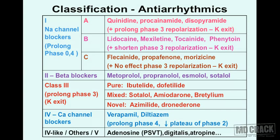Class 1 has three subclasses: 1A, 1B, and 1C. Class 1A drugs are sodium channel blockers that prolong phases 0 and 4, and additionally they prolong phase 3 repolarization — that's the potassium exit. The class 1A agents are quinidine, procainamide, and disopyramide.